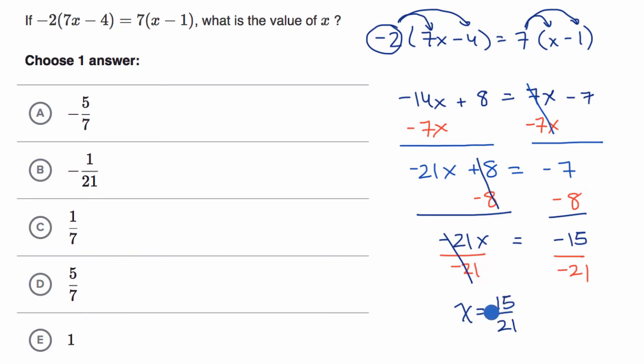Now if we think about a common factor, 15 and 21, three might jump out at you. So if you divide both the numerator and the denominator by three, you are going to get 15 divided by three is five, 21 divided by three is seven. So x is equal to five sevenths, which is this choice right over there.